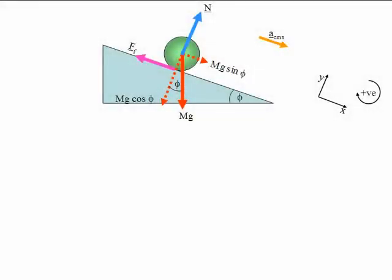As usual, we start with a free body diagram for this problem. I've drawn on all the usual forces: the force of gravity acting vertically downwards, resolved into two components — one acting down the slope and one perpendicular to the slope — and the normal force N, acting perpendicular to the slope. Notice that there is a frictional force acting up the slope, which prevents the ball from sliding down and also produces a torque on the ball, causing it to roll.